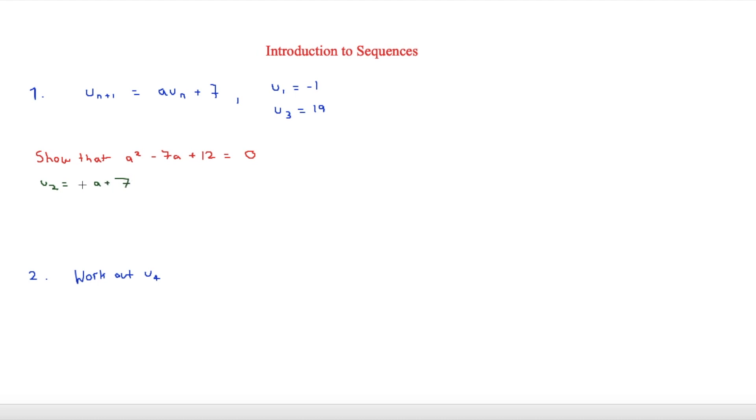So with u2, we can then sub this back in to find what u3 is. And we know that u3 is equal to 19. So that means that we can just put 19 here. And then we have a, that's going to be times by minus a plus 7.